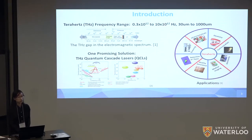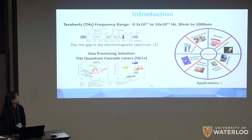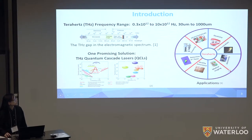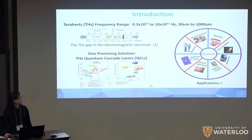The terahertz frequency range is roughly defined as 0.3 THz to 10 THz, or equivalently 30 micrometers to 1000 micrometers wavelength. There are many applications for this range such as communications, astronomy, screening, chemical detection, and medical imaging. For example, in medical imaging, the terahertz frequency range is attractive because terahertz energy is only around tens of meV, making it a non-invasive method. However, there aren't any satisfactory terahertz radiation sources, which results in the terahertz gap in the electromagnetic spectrum.